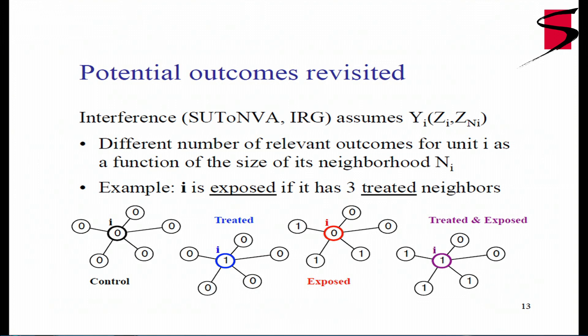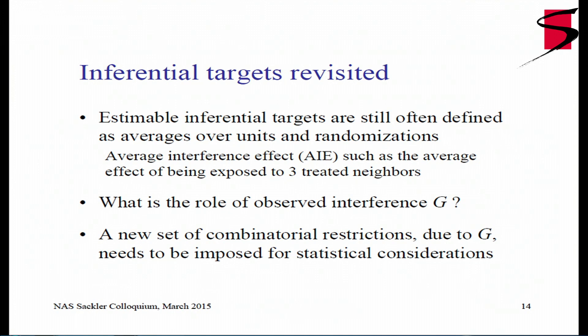In this new situation, we have a slightly more complicated potential outcome table, and several situations we have to care about — these four situations. I'm not saying those are all the possible treatment assignments; I can decide to have one, two, or different sets of neighbors treated. But what I'm saying is that the unit itself will be either in control, treatment, exposed, or treated-and-exposed. Those are the four situations, so in some sense we do have some simplification there.